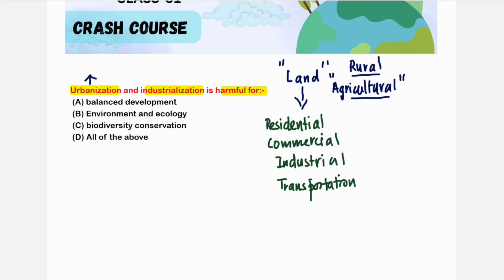Agricultural land is land used for farming, planting, and grazing animals. When we convert or transform this land for residential, commercial, or industrial use, that is what urbanization means. Industrialization means the setting up of industries.